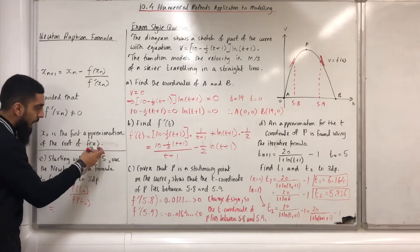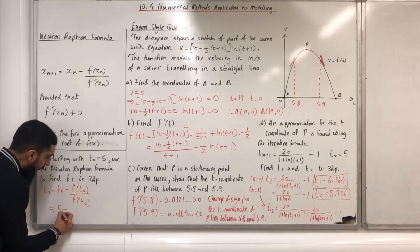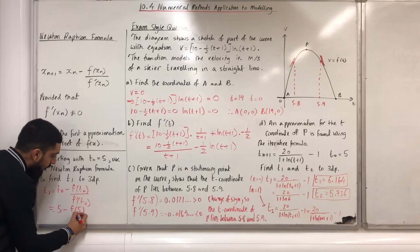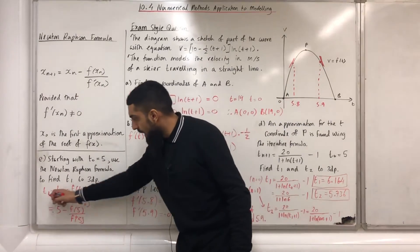So we have t_0 = 5. We can replace t_0 with 5 to give us 5 - f(5)/f'(5). So what I need to do now is use my calculator to find t_1.